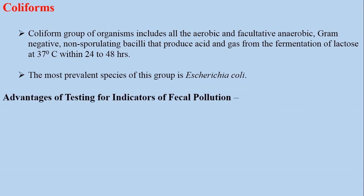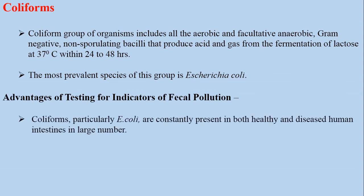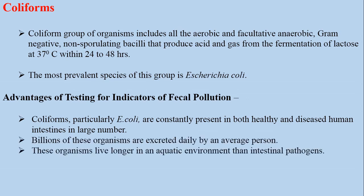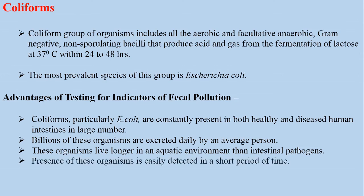The advantages of testing for these organisms as an indicator of fecal pollution rather than specific pathogens are: coliform organisms, particularly E. coli, are constantly present in both healthy and diseased human intestines in large numbers. Millions of these organisms are excreted daily by an average person. It is estimated that for every pathogen in polluted water supplies, there are usually millions of coliforms, particularly E. coli. These coliform organisms live longer in an aquatic environment than the intestinal pathogens, making it possible to detect recent as well as earlier pollution.